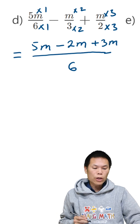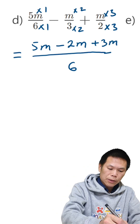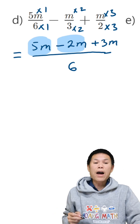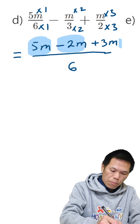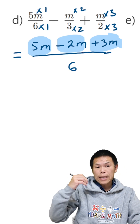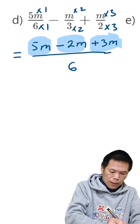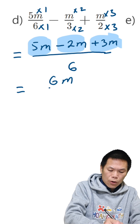So there you go. Now we just collect the like terms. So 5 minus 2 — 5 minus 2 is 3. 3 plus 3 is 6. So the answer is 6m over 6.